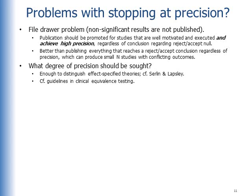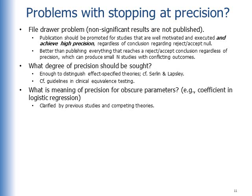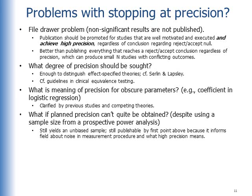Now what degree of precision should be sought? Well, enough to distinguish effect-specified theories. And there are guidelines like this in clinical equivalence testing. What's the meaning of precision for obscure parameters like coefficients in logistic regression? Well, that's clarified by previous studies and competing theories, so those parameters actually get meaning with reference to previous studies. What if planned precision can't quite be obtained despite using a sample size from a prospective power analysis? Well, it still yields an unbiased sample, and it's still publishable by that first point above because it informs the field about noise in the measurement procedure.